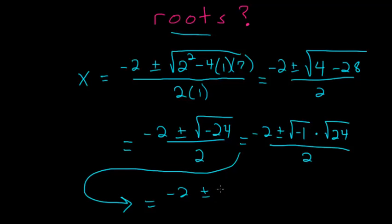And we have minus 2 plus or minus i and root 24 can be split up into the square root of 6 times the square root of 4 since we can actually take the square root of 4.